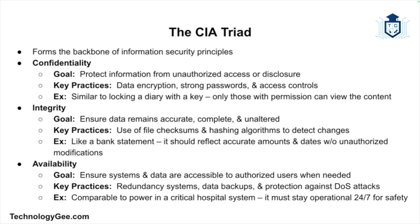Let's start with the CIA triad, which forms the backbone of security principles. CIA stands for confidentiality, integrity, and availability. Confidentiality refers to protecting information from unauthorized access or disclosure. In practice, this means ensuring that only those who have permission can view or use the data. Examples include encrypting sensitive data, using passwords, and employing access control measures. A common analogy is locking a diary with a key to prevent others from reading it.